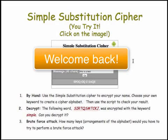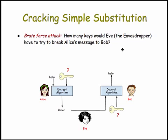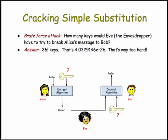Hopefully you enjoyed those exercises. The last question: how many keys would you have to try in order to perform a brute force attack on symbol substitution? The answer is an enormous number — 26 factorial keys. That's the number of ways you could shuffle the plaintext alphabet of 26 letters. So that's way too hard, and that fact makes Alice and Bob happy and Eve not very happy.